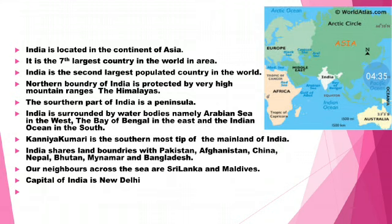The seven continents are North America, South America, Africa, Antarctica, Asia, Australia, and Europe. The biggest continent is Asia, and India is located in Asia. The smallest continent is Europe. India is the seventh largest country in the world by area. The first largest country in the world by area is Russia.